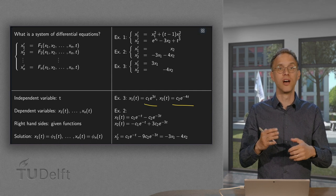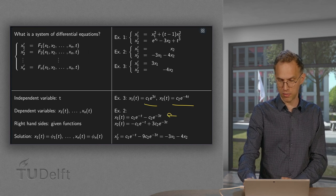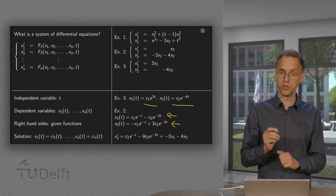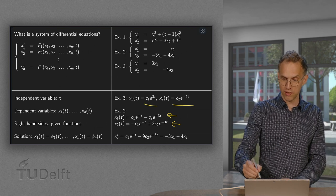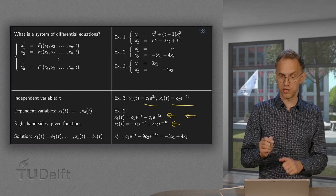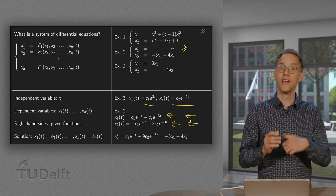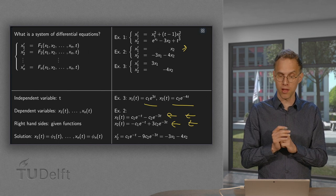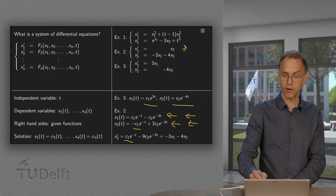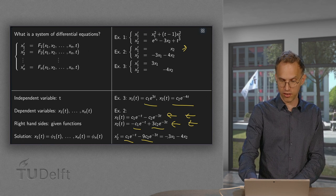Moving on to example two, I will give the solution now — later you will learn how to find it. The solution has x1 as a linear combination of exponentials and x2 similarly. You can check this is indeed a solution: if you differentiate x1, you get minus C1 e to the power minus t, plus 3 times C2 times e to the power minus 3t, which is indeed x2. So we satisfy our first differential equation. Now let us check the second: computing x2 prime, we get plus C1 e to the power minus t and minus 9 times C2 times e to the power minus 3t. And computing minus 3 times x1 we get minus 3C1.